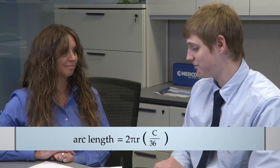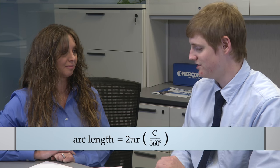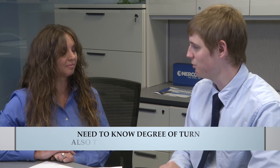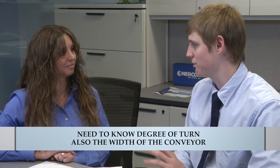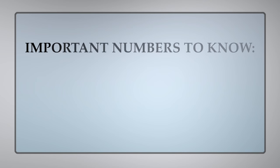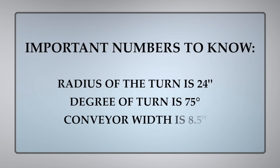We need to calculate the arc length. Arc length is the percentage of the circumference of a circle. We need to know the radius and the degree of the turn. We will also need to know the width of the conveyor so we can calculate both guide rails. The radius of the turn is 24 inches, the degree of the turn is 75 degrees, and the width of the conveyor is 8 and a half inches.